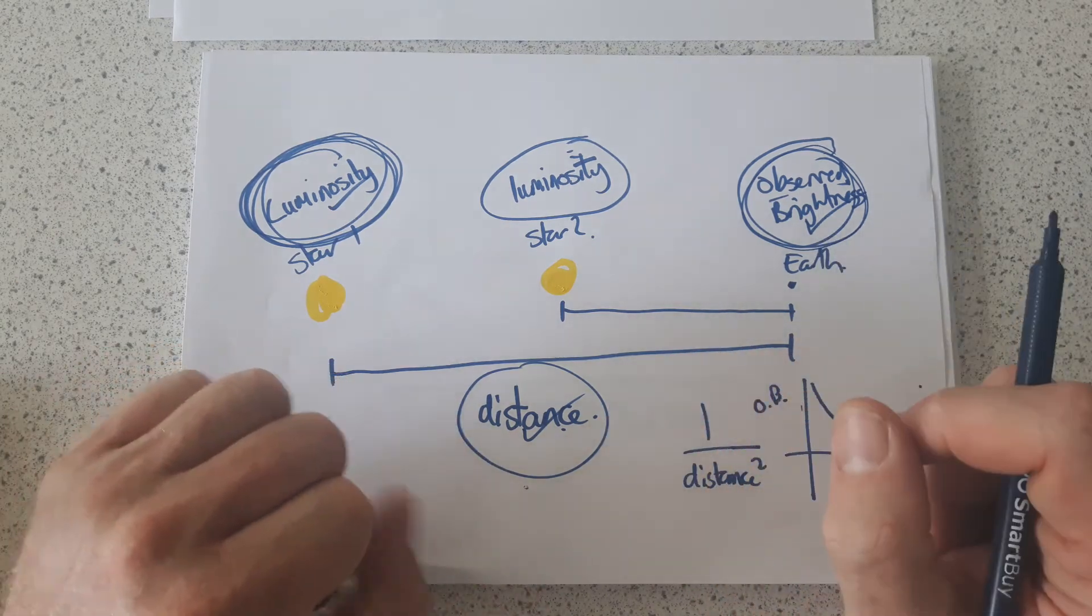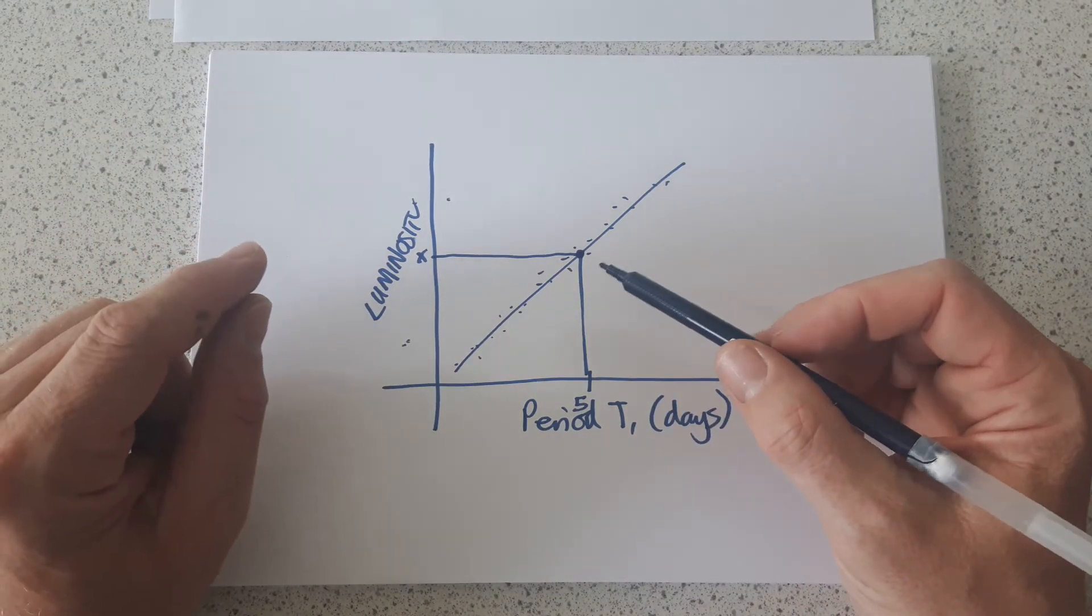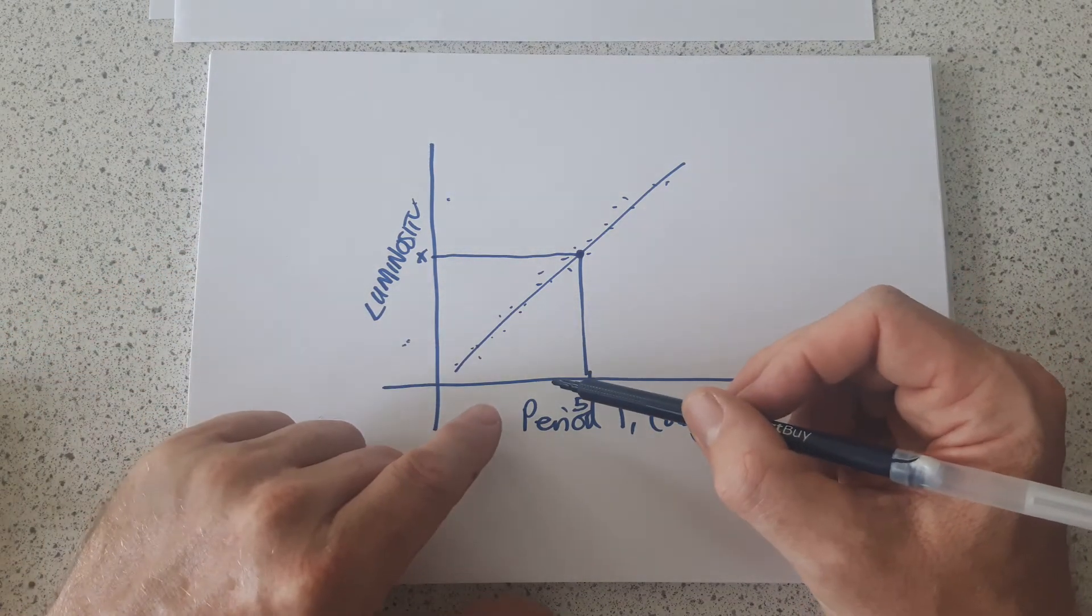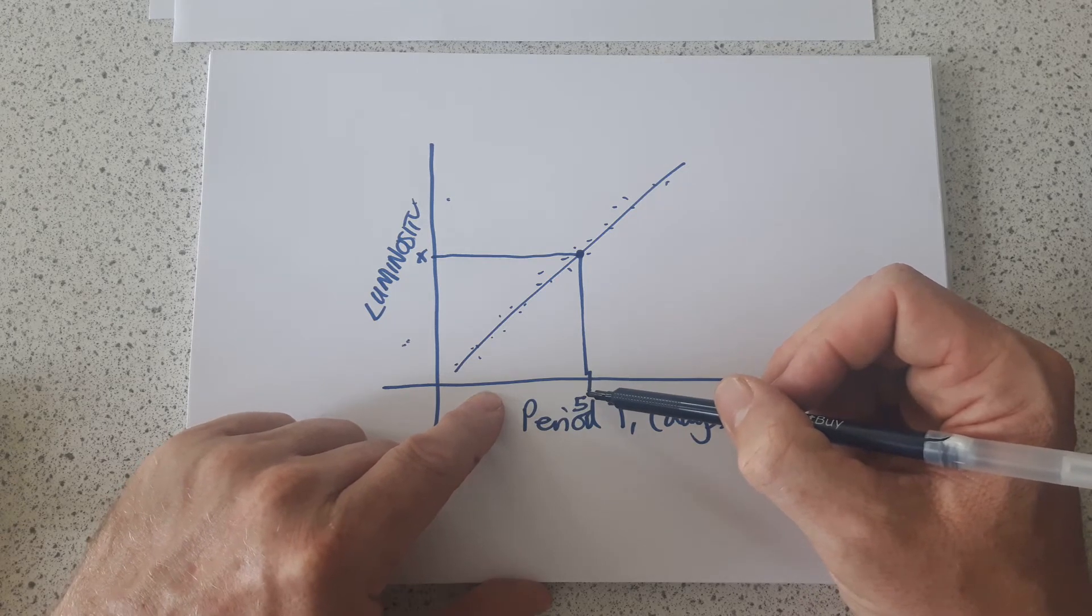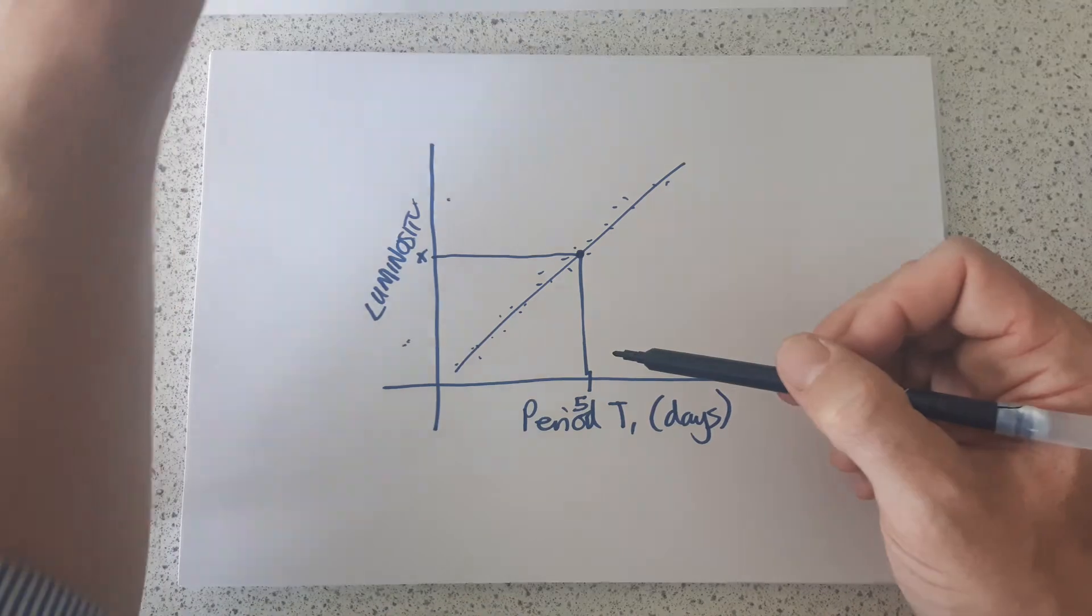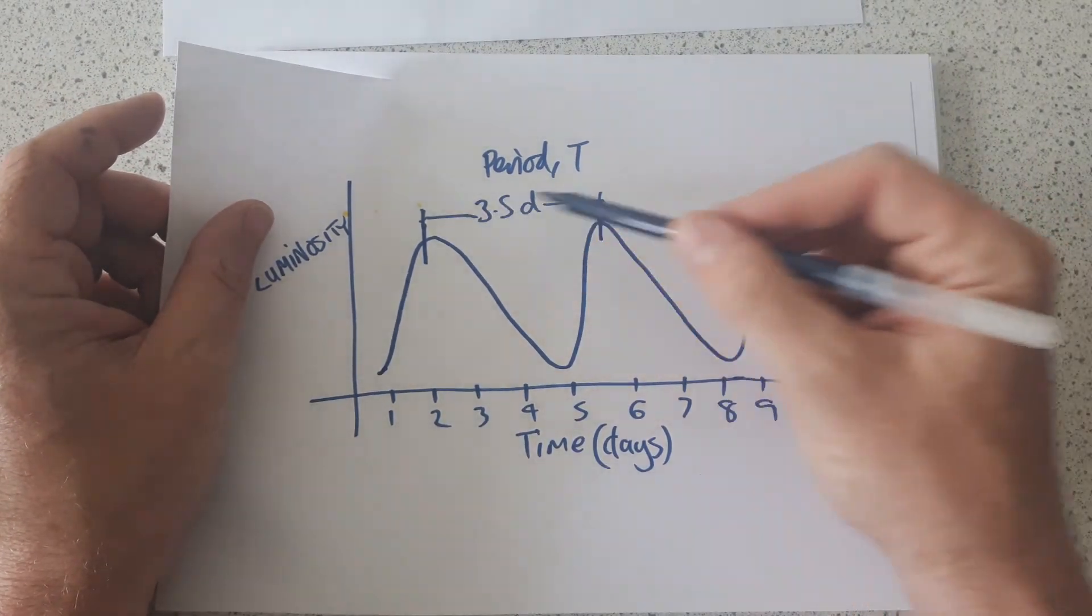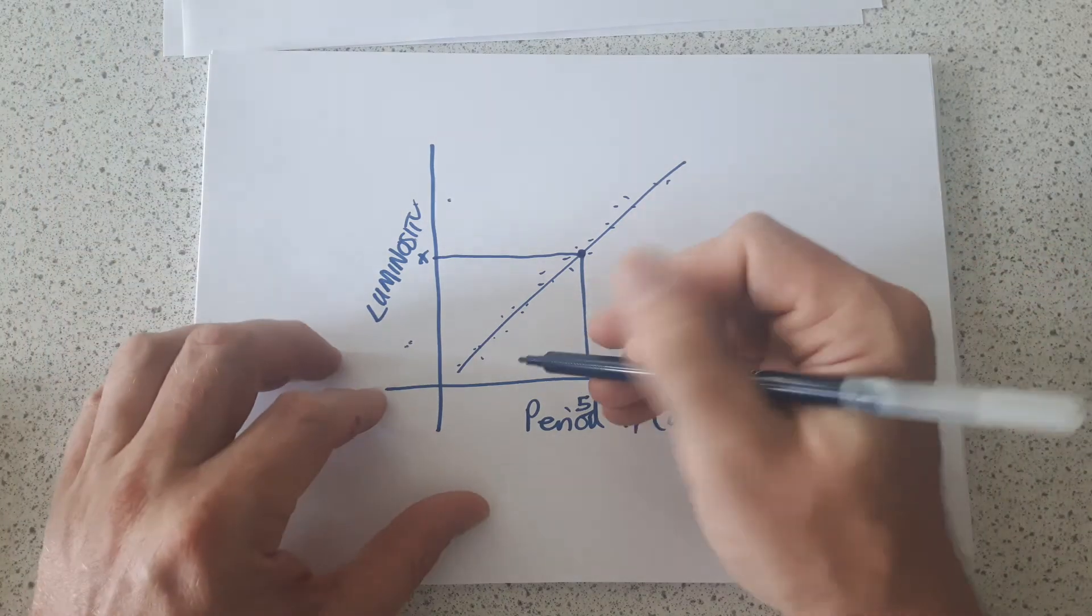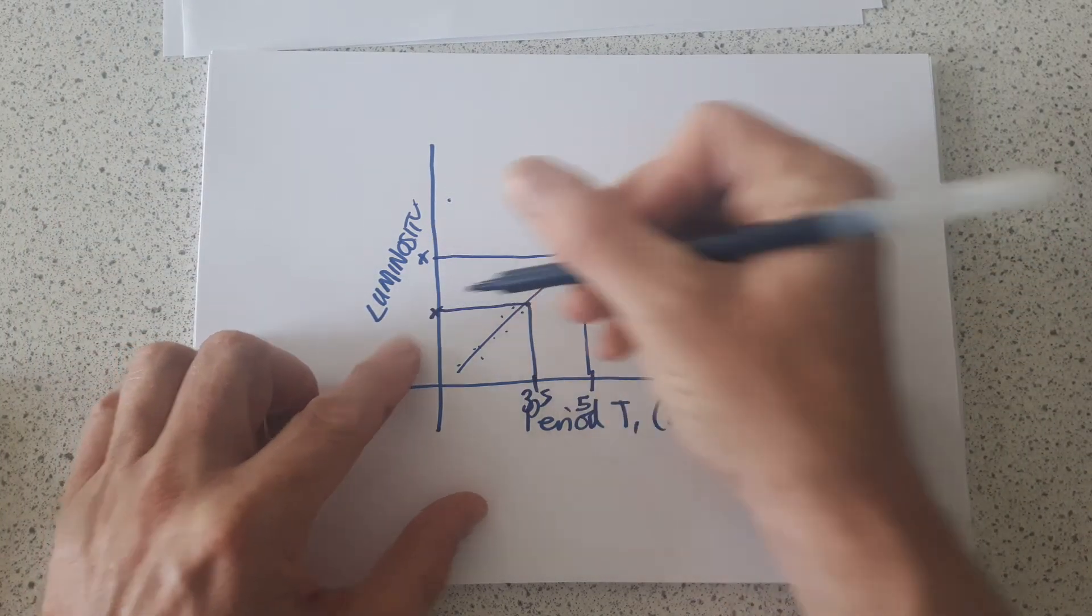So the Cepheid variable method uses a Cepheid variable star, which you then measure the period of brightening and dimming, which is something you can do fairly easily from Earth. Plot yourself the graph of brightening and dimming for that star, work out its period, then go to the graph and that tells you the luminosity.